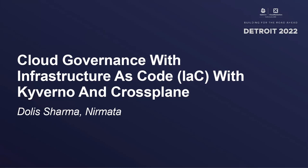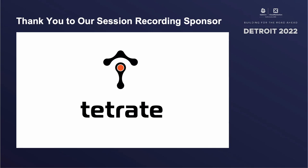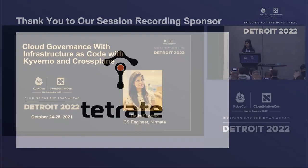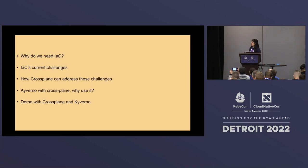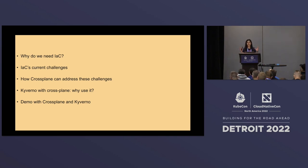Hi everyone. Today we're going to talk about cloud governance with infrastructure as code, also called IAC, with Kyverno and Crossplane. I'll start with why we need IAC and what are the current challenges we see today while using IAC. I'll talk about how Crossplane can address these challenges, and I also have a quick demo showing how to use Crossplane and Kyverno together for cloud governance with IAC.